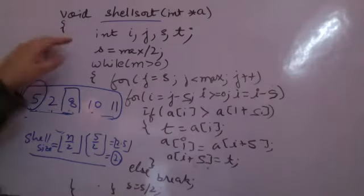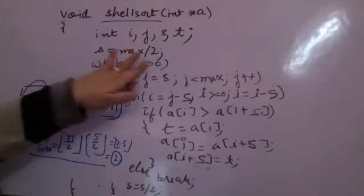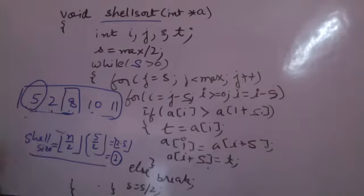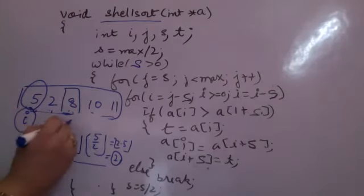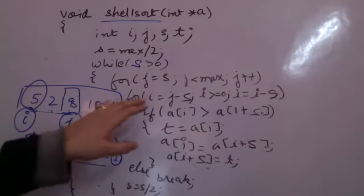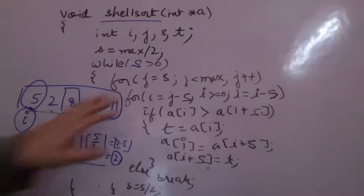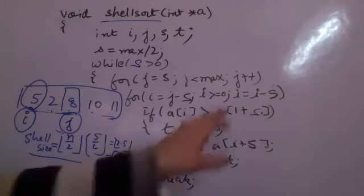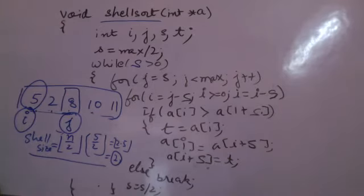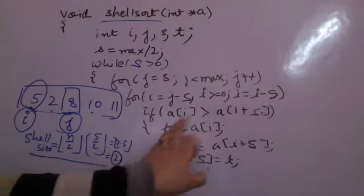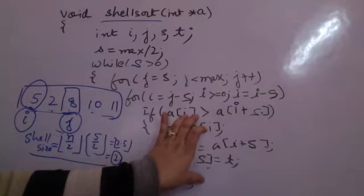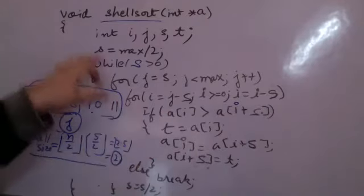I am calculating the shell size while the shell size is greater than 0. What am I doing? I am running a loop. There are two elements to be compared. So this is my i, which is at the beginning of the loop. And this is my j, which is at the shell. Till j is less than the max element, then I am running a loop. i is j minus s — that is j minus shell size, which will be beginning with 0 in our case. i has to be greater than 0 and I am decreasing. I am comparing the elements: this is i plus s. If A of i is greater than A of i plus s, swap the elements. Else break from the inner loop and go to the outer loop.